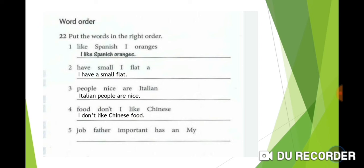Number 5: Job Father Important Has And My. The subject is Father, but we must put My before it—that's an adjective pronoun. My Father. The verb is Has: An Important Job. Job is the object, with the adjective important before it, and the indefinite article an before them. The sentence becomes: My father has an important job.